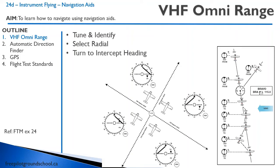The third thing when tracking or intercepting a radial is to turn to intercept on the appropriate heading. You need to know where you are, because you need to figure out whether to turn left or right. If you turn the wrong way, you'll never intercept that VOR. It's really important that you understand how the VOR works — it's position sensitive — and where you are in relation to it.